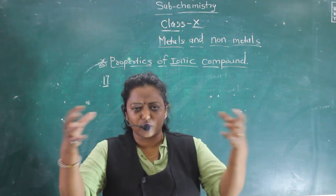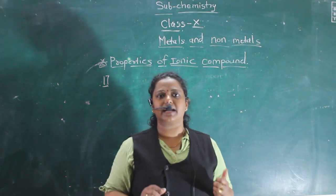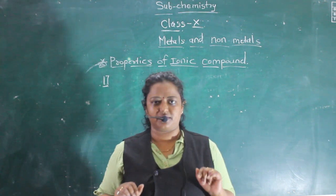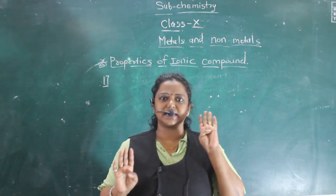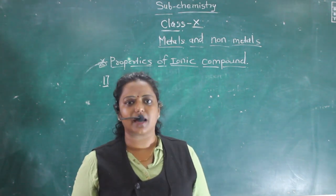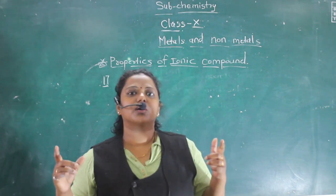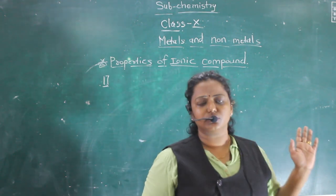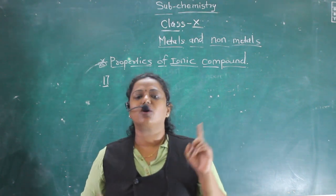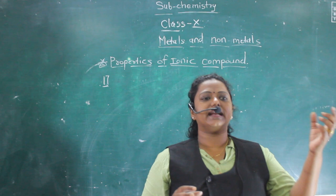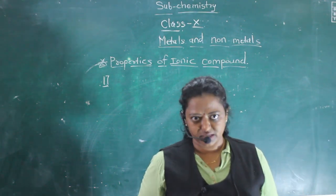Can you guess what forms when metal and non-metal combine with each other? Ionic compounds are formed. There are two kinds of compounds: ionic compound and covalent compound. Covalent compounds will be in lesson number 4, on carbon compounds. Here I will explain ionic compounds, which are formed by the combination of metal and non-metal through electron donation and electron acceptance.